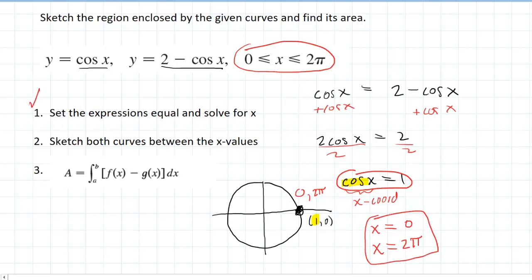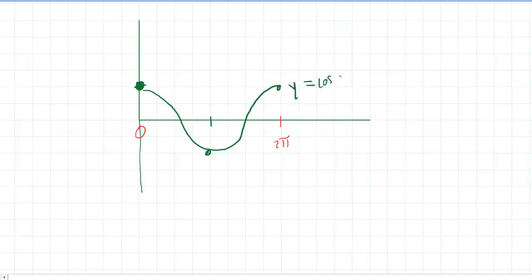That completes step one. Now we're going to sketch both curves between the x values that we just discovered, between 0 and 2π. So we will set up a graph to show the region formed by these two curves. We're going to go from 0 to 2π. So y equals cos x is a pretty familiar curve. You may recall that it begins at 0, 1. And then it kind of moves down and then back up. So actually at π, it gets down to negative 1. So that would be the graph of y equals cos x.